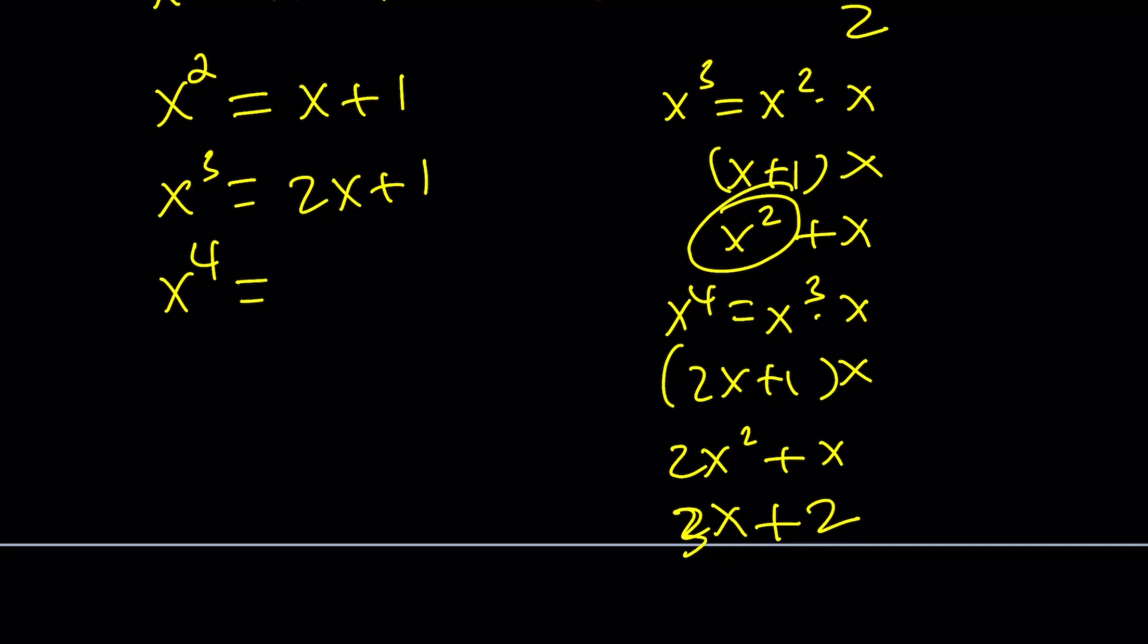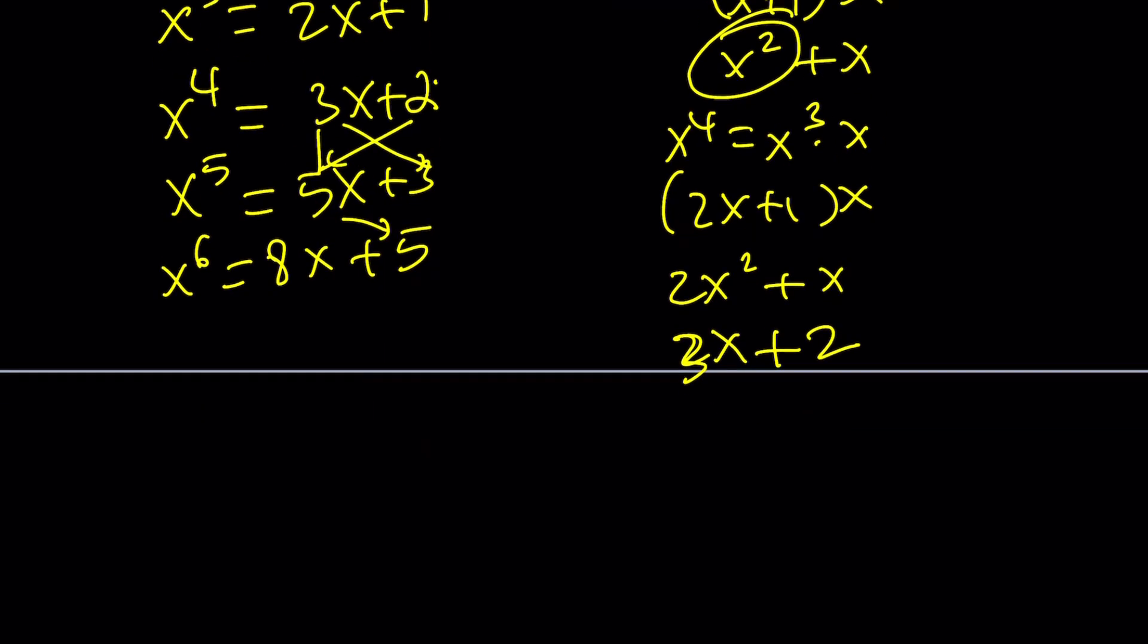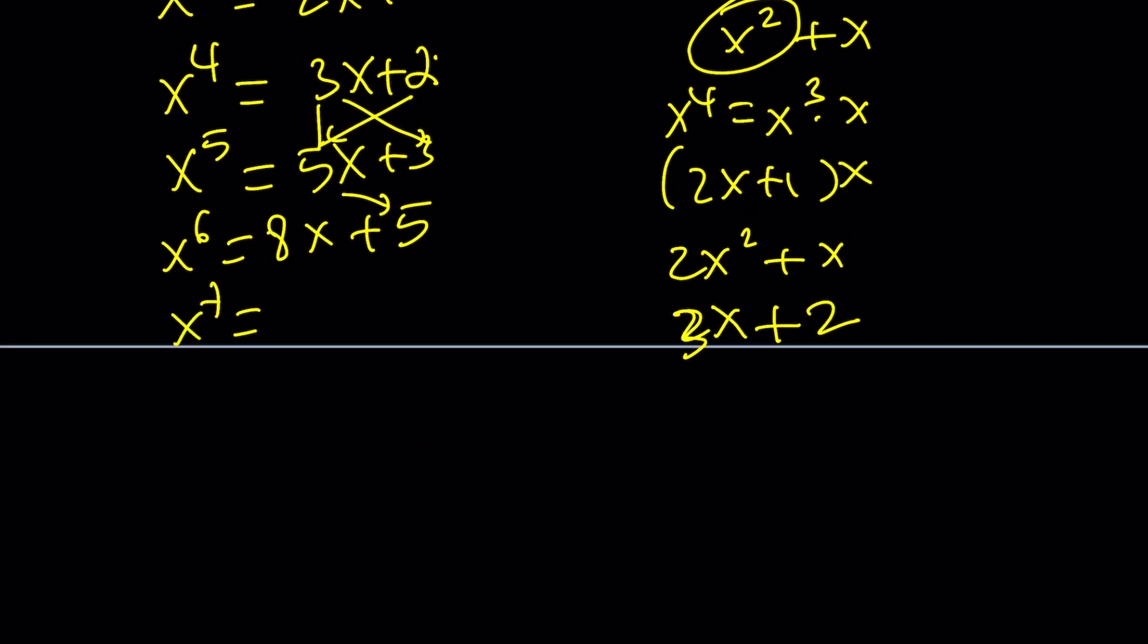Going in this pattern, you're going to get the following. Without further ado, let me give you more terms. x to the fifth power is 5x plus 3. And then x to the sixth is 8x plus 5. You get the idea? 3 plus 2 is 5. So this number is obtained by 3 plus 2, and 3 is just copied. And then the same thing happens over and over. x to the seventh is 13x plus 8.